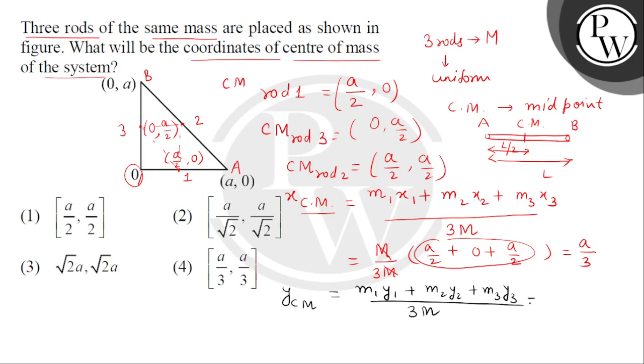So, again M cancel ho jayega. Hume sare y coordinates ko add kar denge. So, these are y coordinates. So, this will be addition will be A divided by 3. Toh hume x coordinate and y coordinate dono ka answer mil raha hai A by 3. So, correct answer is option 4. Thank you.